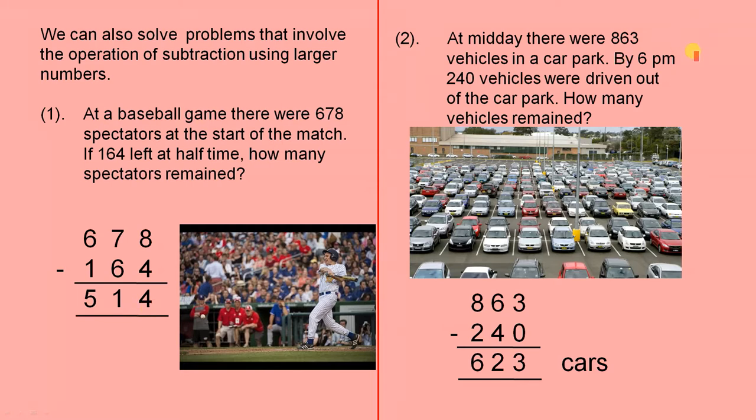At midday there were 863 vehicles in a car park. By 6pm, 240 vehicles were driven out of the car park. How many vehicles remained?